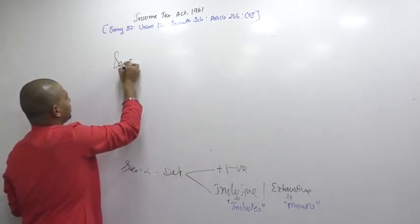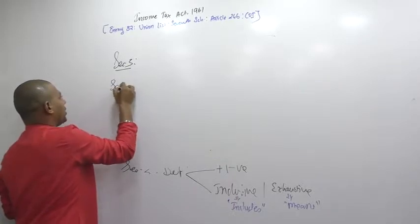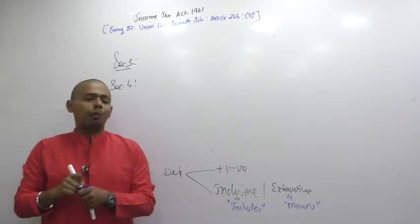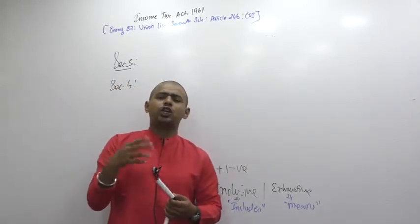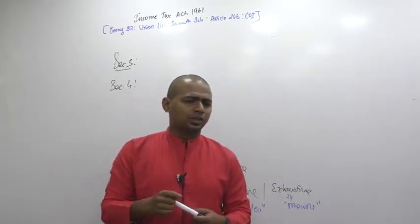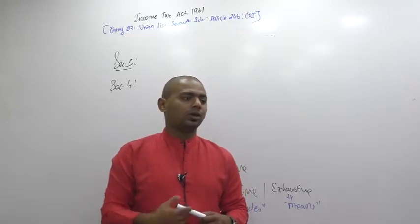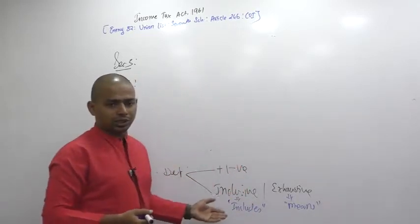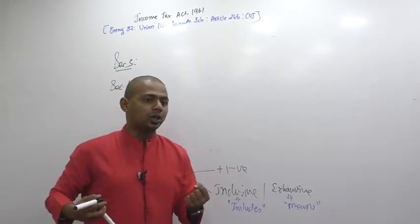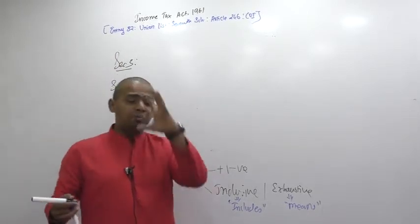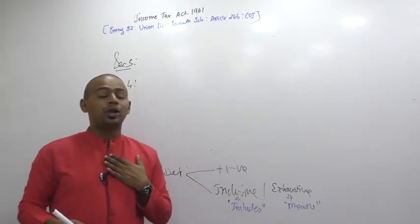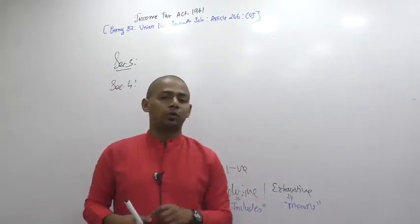Then we have Section 3, and then Section 4. Now, if you are a lawmaker, which section would you draft first — the most important one, or an ordinary one? Obviously the important one. Sections 1 and 2 are just the foundation. The next section should be the base, the important section. So Section 3 was supposed to be the main section — known as the charging section, the backbone. But Section 3 is not the backbone; Section 4 is.